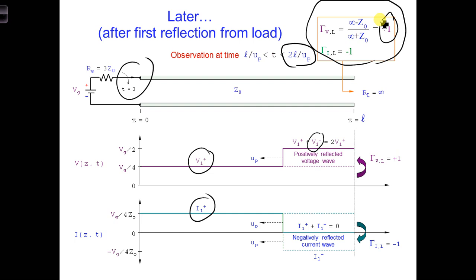This means that the amplitude of V1 minus is equal to V1 plus, and over the distance that V1 minus has traveled, the total voltage on the transmission line is 2V1 plus.